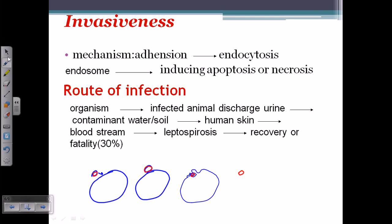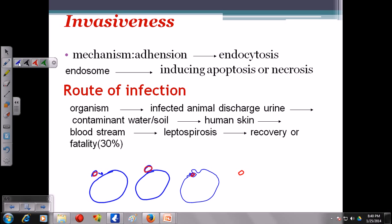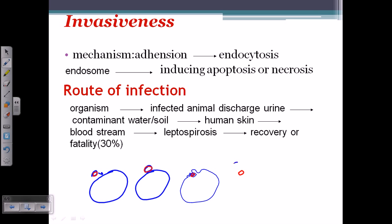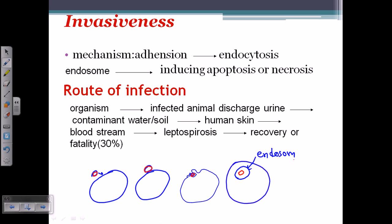Let us draw the cell — here we go. This is the host cell. Inside, we are having a vesicle, and inside the vesicle we are having the bacteria. The formation of this vesicle is called the endosome, because the vesicle is formed after endocytosis.